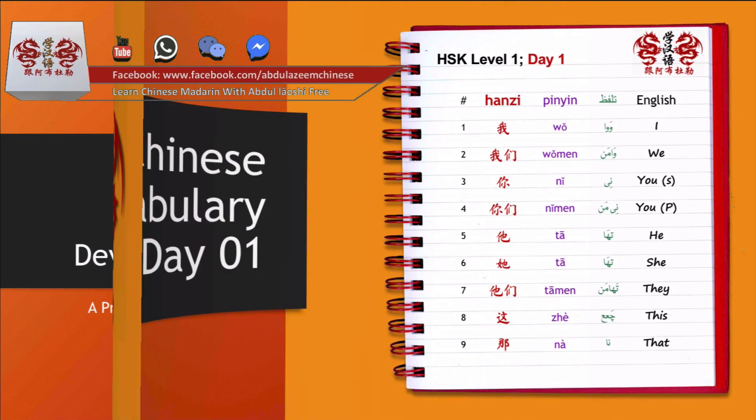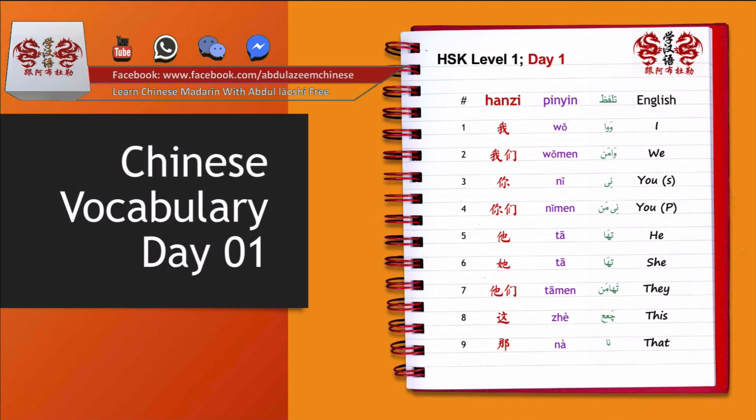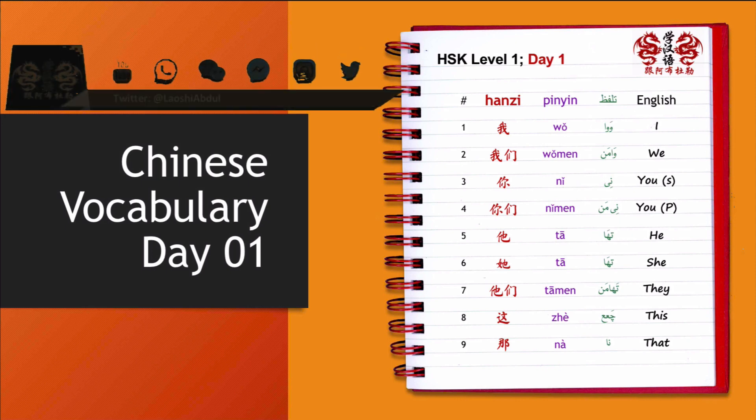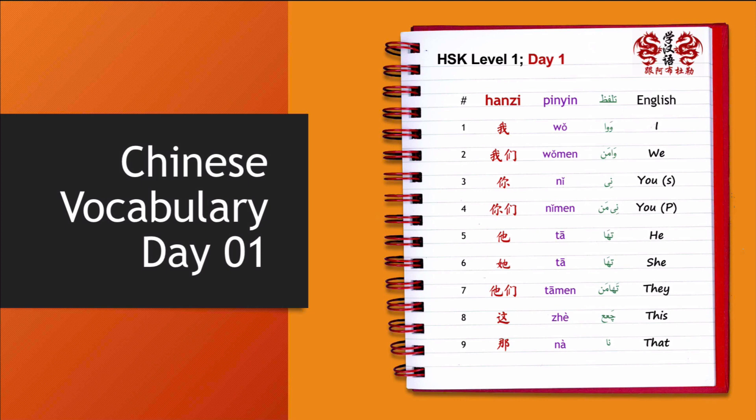Day 1 vocabulary: wǒ (I), wǒmen (we), nǐ (you), nǐmen (you all), tā (he/she/it), tāmen (they). Also: dà (big), nà (that).